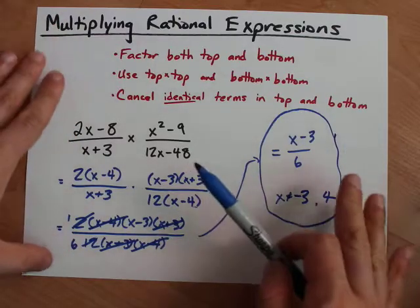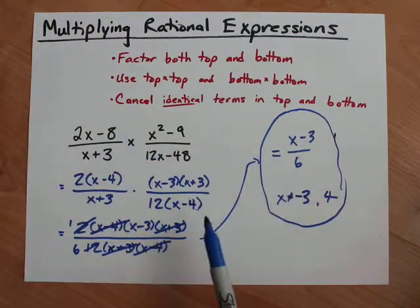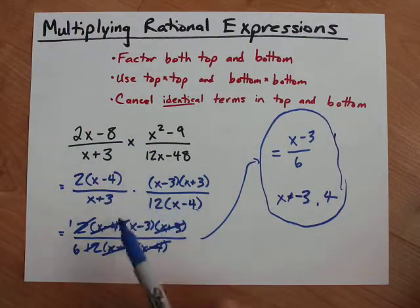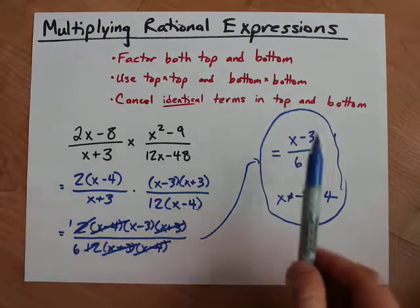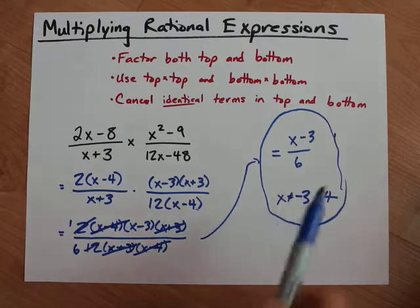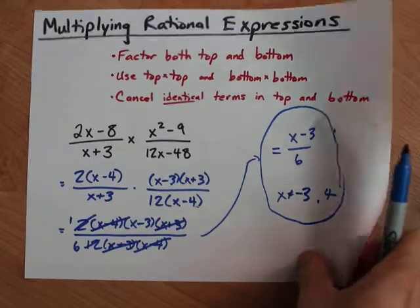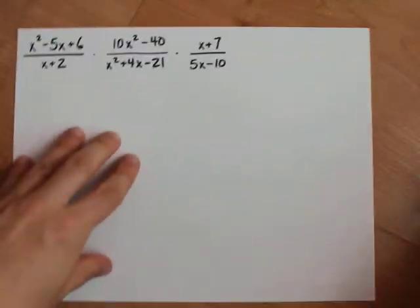But again, let's emphasize. You're factoring everything. Multiplying top times top and bottom times bottom to make one mega fraction answer. And then canceling as much as possible before you state your restrictions. Shall we do it again? Yes, we shall.